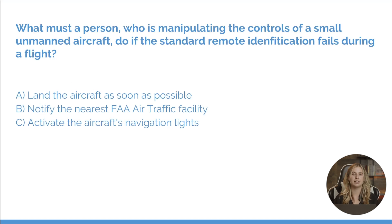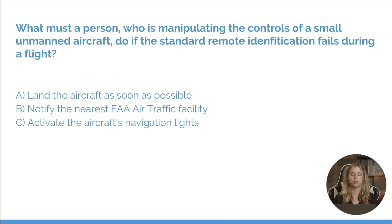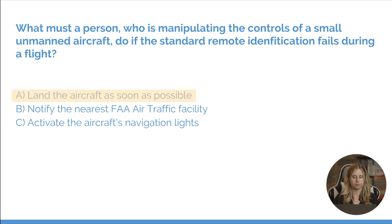Let's get into some questions we might see on our Part 107 written test. What must a person who is manipulating the controls of a small unmanned aircraft do if the standard remote identification fails during a flight? A, land the aircraft as soon as possible. B, notify the nearest FAA air traffic facility. Or C, activate the aircraft's navigation lights. In this situation, we would want to land the aircraft as soon as possible, so our answer is A.